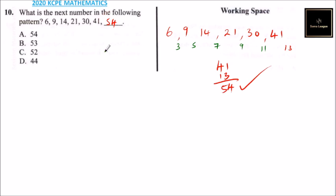So if you look at the answers, the correct answer is A. It is not 53, it is not 52, it is not 44. So that's how you answer that question.